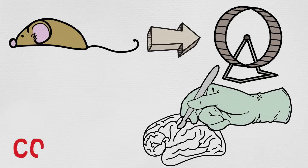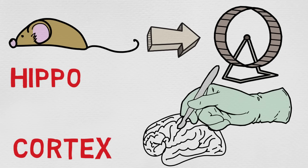He looked at their brains and the cortex, which is the top part of the brain, was thicker. And there was one particular area called the hippocampus, which was bigger when compared to the mice that didn't run on the wheel.